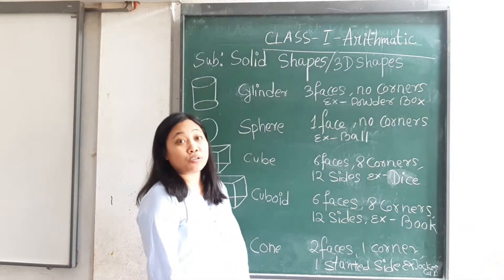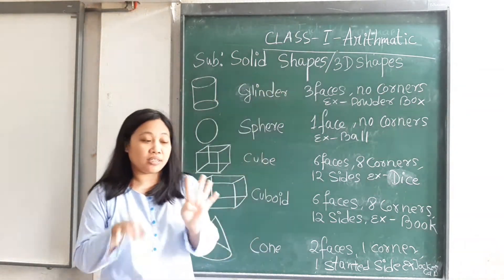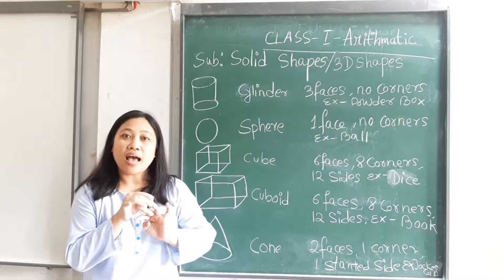Now solid shape is also known as 3D shape, because solid shapes have three dimensions: length, breadth, and height.